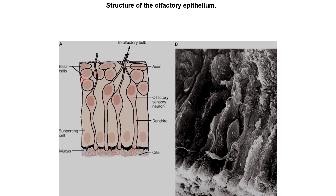There are also basal cells, which are essentially stem cells that can form supporting cells or new olfactory sensory neurons. Although most neurons in our nervous system do not regenerate, olfactory sensory neurons are one of the few types that actually change over the lifetime of a person. The cilia of the olfactory sensory neurons are immersed in a mucus, so odorant molecules that come in through the air we breathe dissolve in the mucus. They can then diffuse to the cilia and bind to the odorant receptors, or be transported by specialized odorant binding proteins present in the mucus.